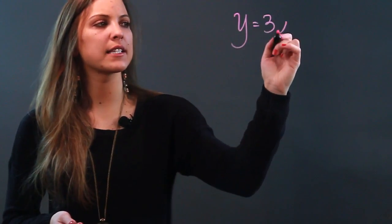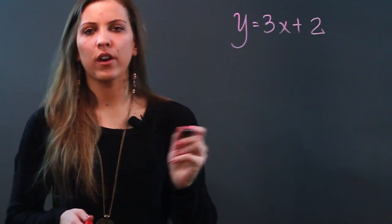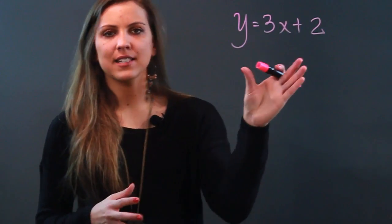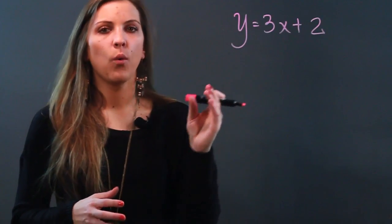So if you're given the equation of a line y equals 3x plus 2 and you want to find the x-intercept, what you have to realize is that wherever the x-intercept of this line is, y is going to be 0.